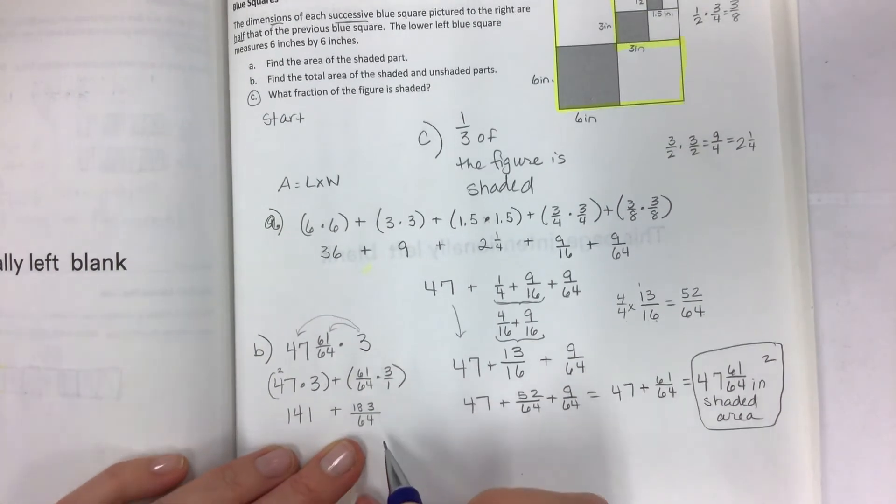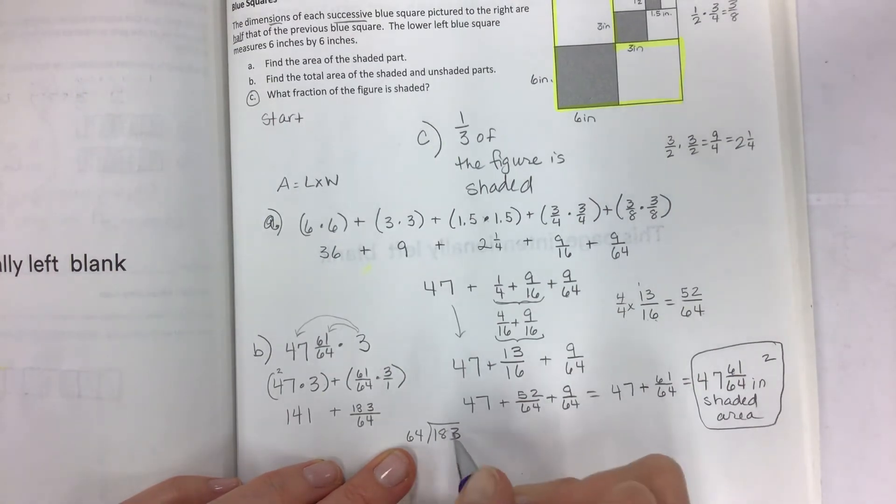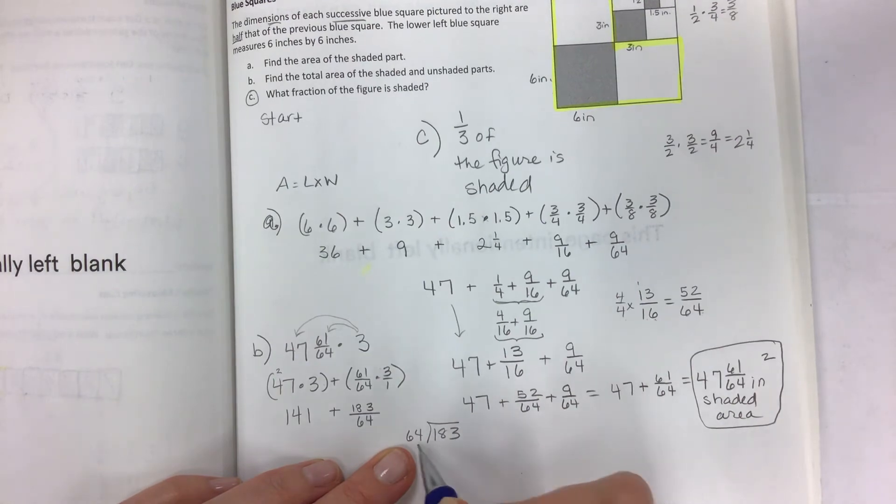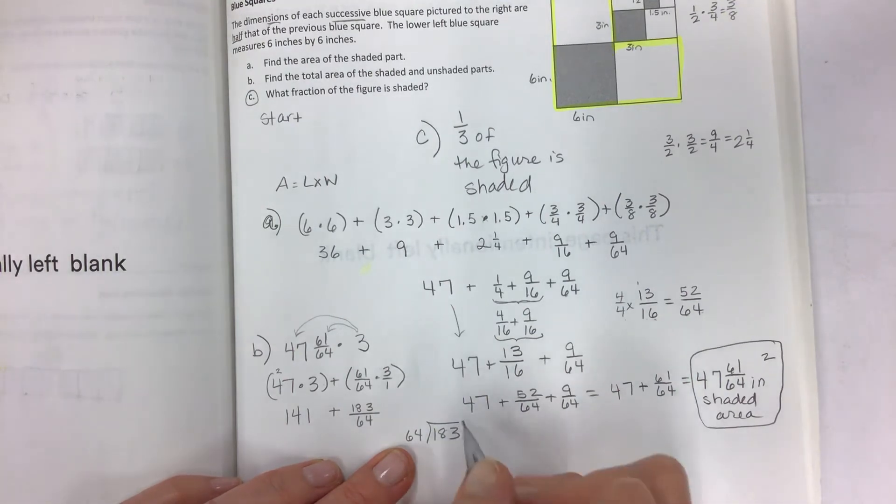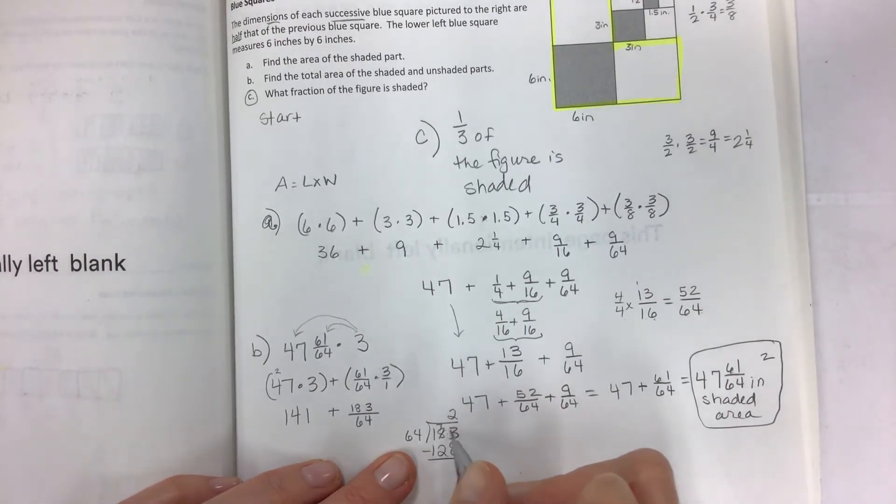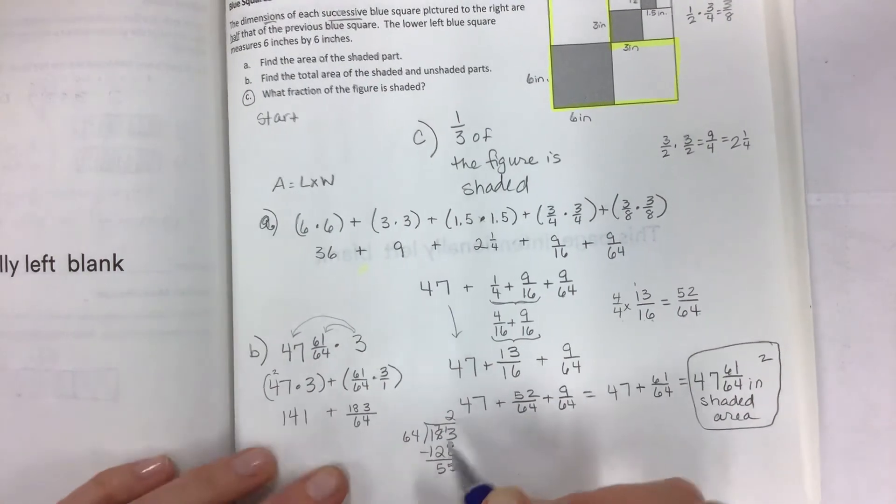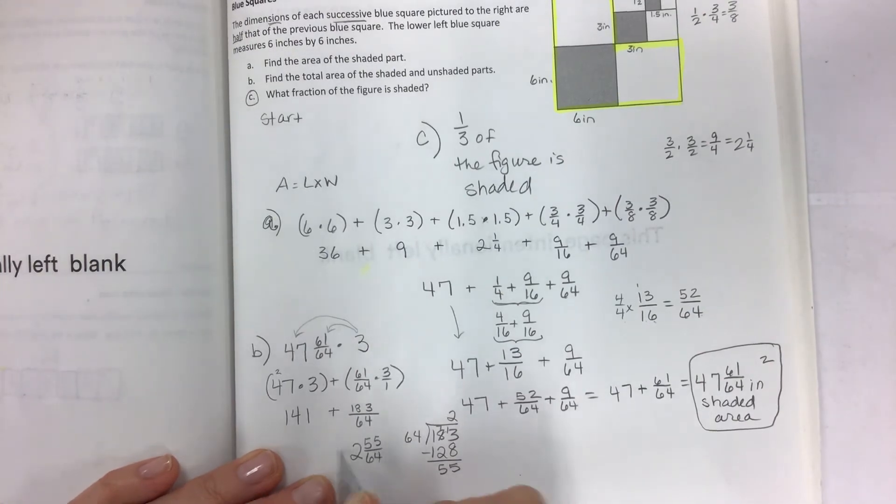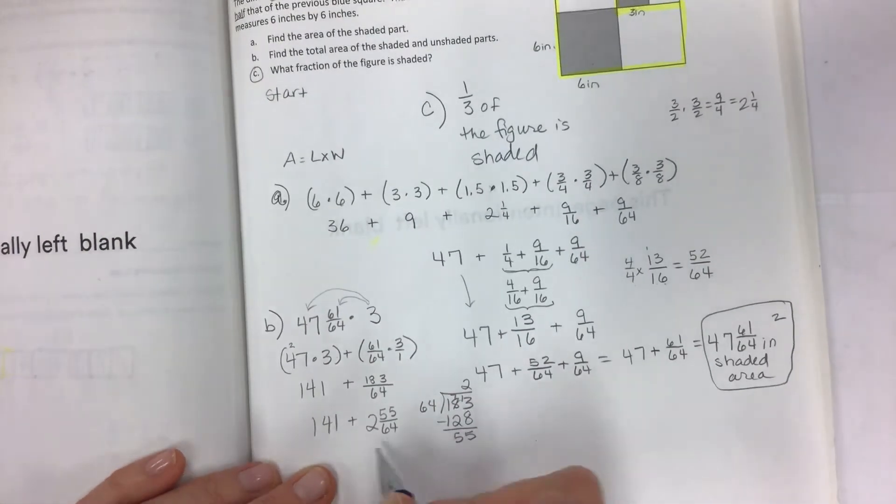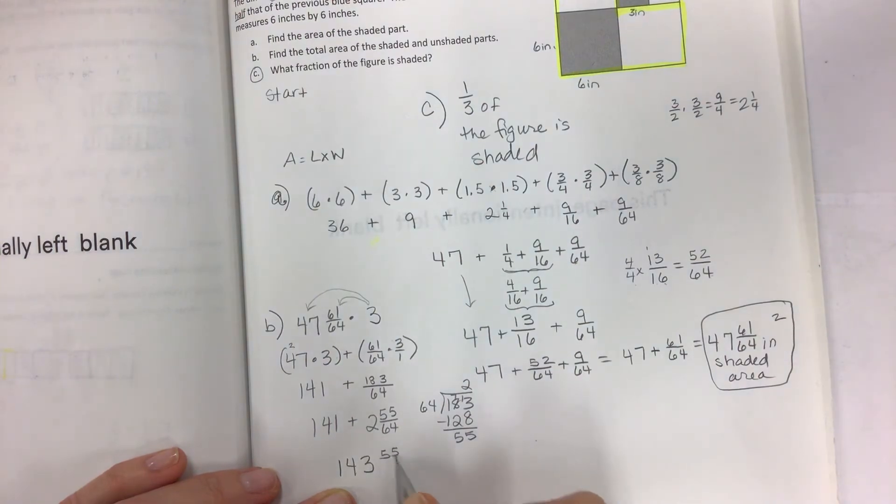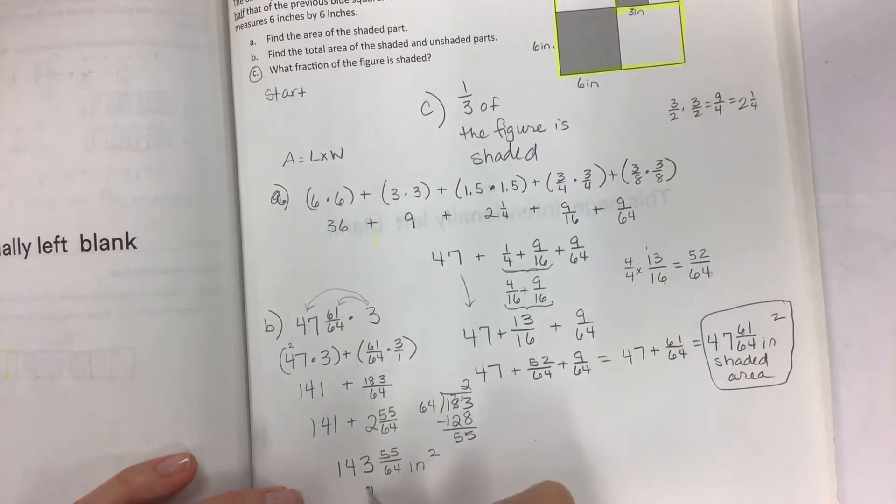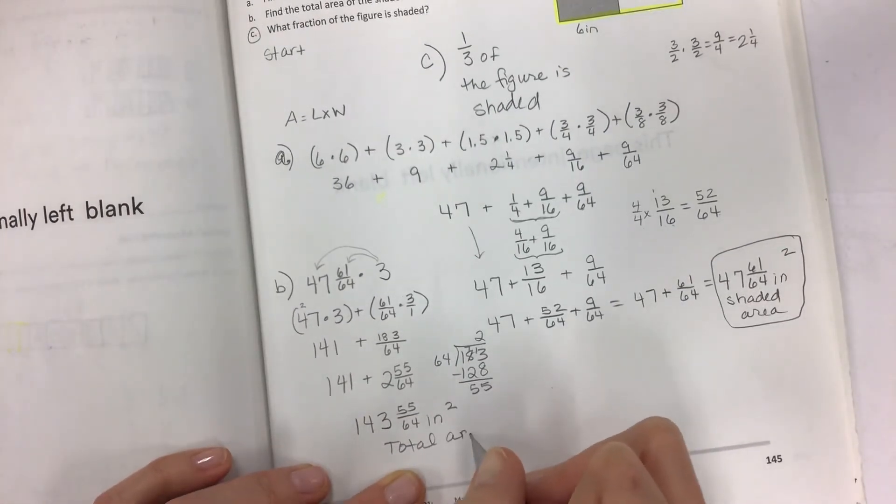Kind of an odd looking problem so let's just lay that out. How many times can I fit 64 into 183? And if I had 2 it would be around 120-something, but if I had 3 it would be bigger than... it would be nice if I had 60, it would be 180, but I don't, I have 4 more than that times 3. So we're going to go with 2. 2 times 4 is 8, 2 times 6 is 12. Now we have a big subtraction problem and you can borrow and regroup. And we have 5, and then 5, and this is less than that so 2 and 55. 64 plus 141 because you just bring that right down and then combine that. 143 and 55 sixty-fourths inches squared total area shaded and unshaded.